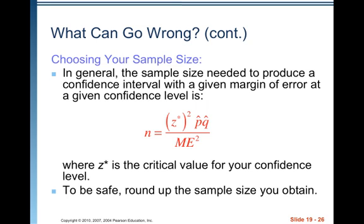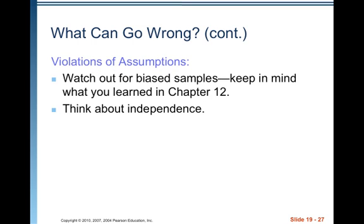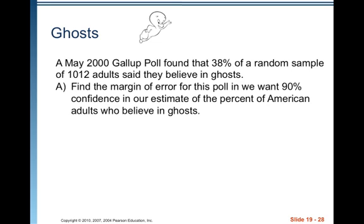Watch out for biased samples — keep in mind what you learned in chapter 12. Randomization is important because it supports independence. Always check that you expect at least 10 successes and 10 failures: use n × p-hat and n × q-hat and make sure both are at least 10. That's it for video 1 — we'll come back and work some examples in video 2.